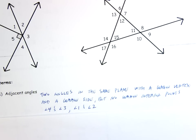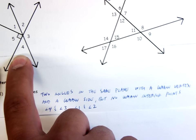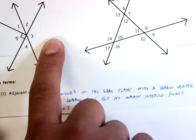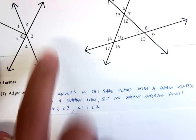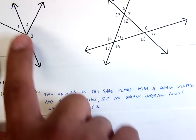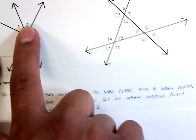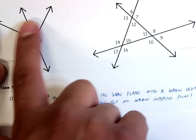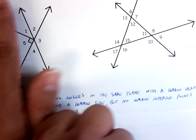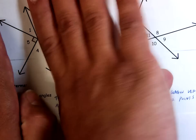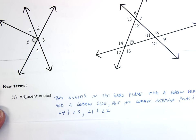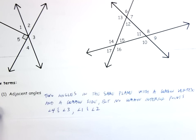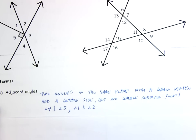Adjacent angles — an example. Angle four and angle three: notice they share this ray in between, but they don't share any points on the inside. Angle one and angle two: they share this ray right here in the middle, but they don't share any points. So there's angle two, there's angle one — they touch, they share a ray, but they don't have any points in common. Two angles in the same plane with a common vertex, common side, but no common interior points.